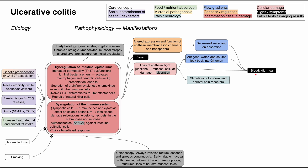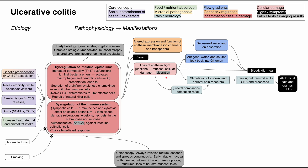The ulcers and diarrhea are very painful, stimulating visceral and parietal pain receptors, causing abdominal pain and cramps typically localized to the left lower quadrant. Additionally, the gut inflammation causes decreased rectal compliance and a decreased defecation reflex, which is painful and contributes to abdominal cramping. This decreased rectal compliance and defecation reflex leads to a sensation called tenesmus — a feeling of unsatisfactory bowel movements, where you feel the urge to go but can't achieve relief.